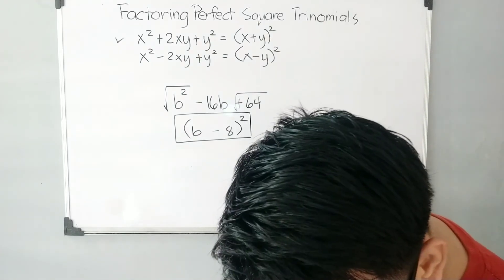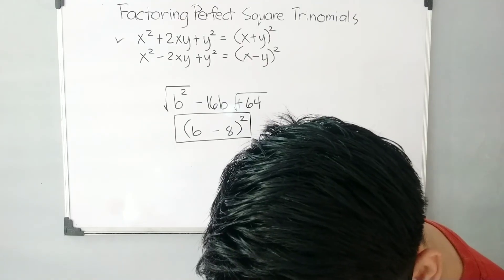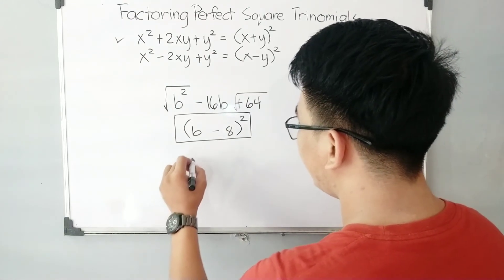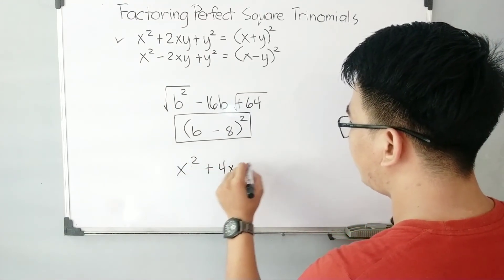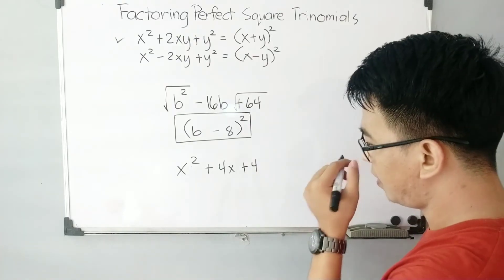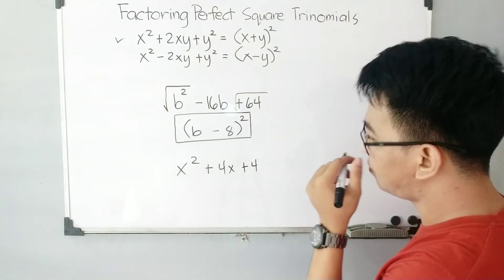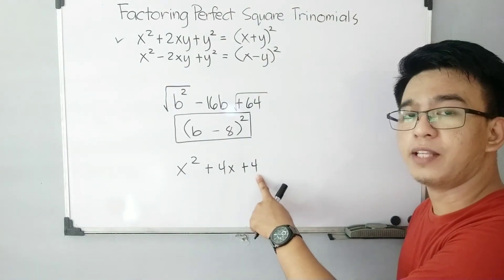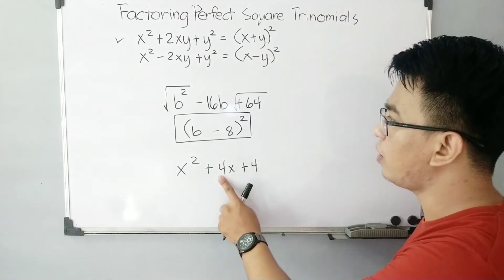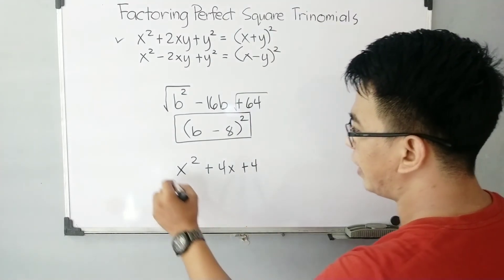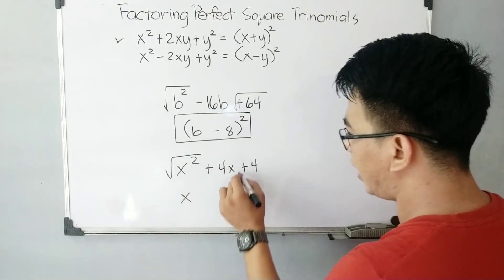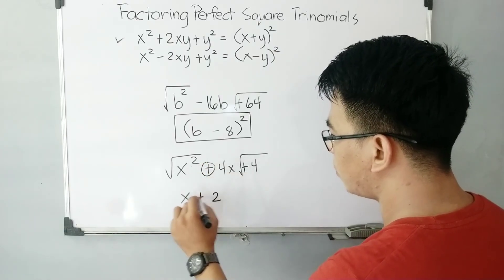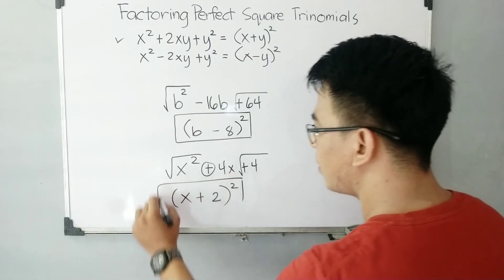Let me have one more example: x squared plus 4x plus 4. x squared is a perfect square, 4 is also a perfect square, and the square root of 4 is 2. So 2 plus 2 gives you 4 — correct. Get the square root of the first term: x. Get the square root of the last term: 2. Copy the symbol, plus, and square the factors. The answer is x plus 2 raised to the second power.